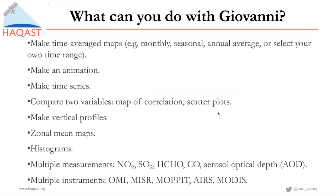For me, the most useful function of Giovanni is that we can make time-averaged maps. For those of you who have experience using satellite data, you may know that some satellite data have large file sizes, and it may take some time to download, process, and visualize the data. But with Giovanni, you can make plots or maps within seconds without having to download the data — and this is very powerful. In Giovanni you can also make animations of maps, time series, comparisons between two variables, correlation maps, scatter plots, vertical profiles, zonal mean maps, and histograms.